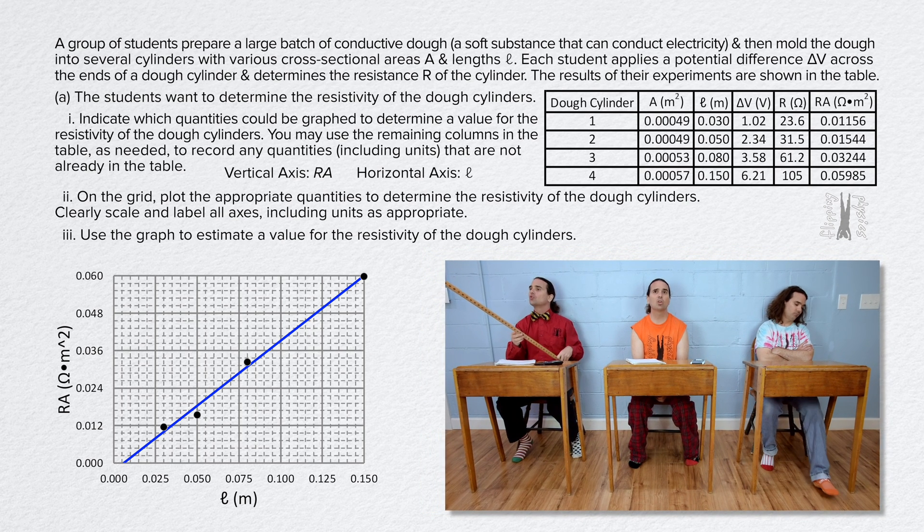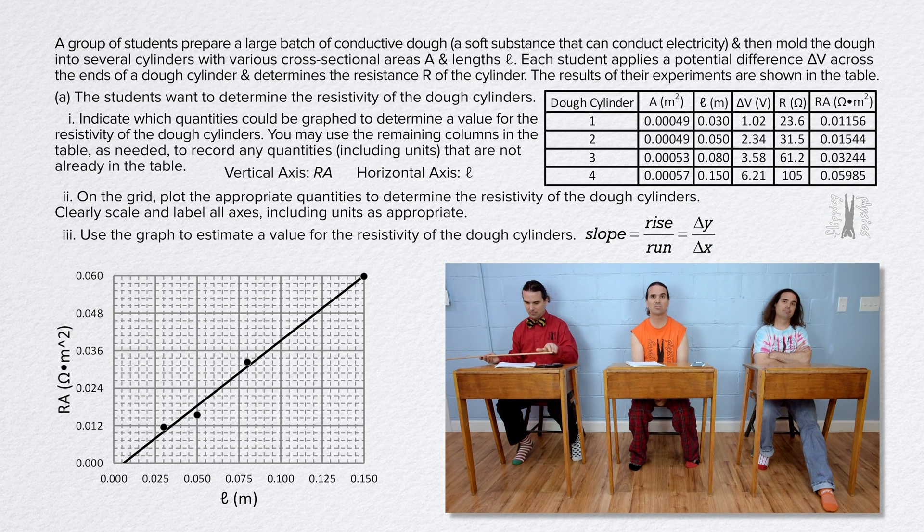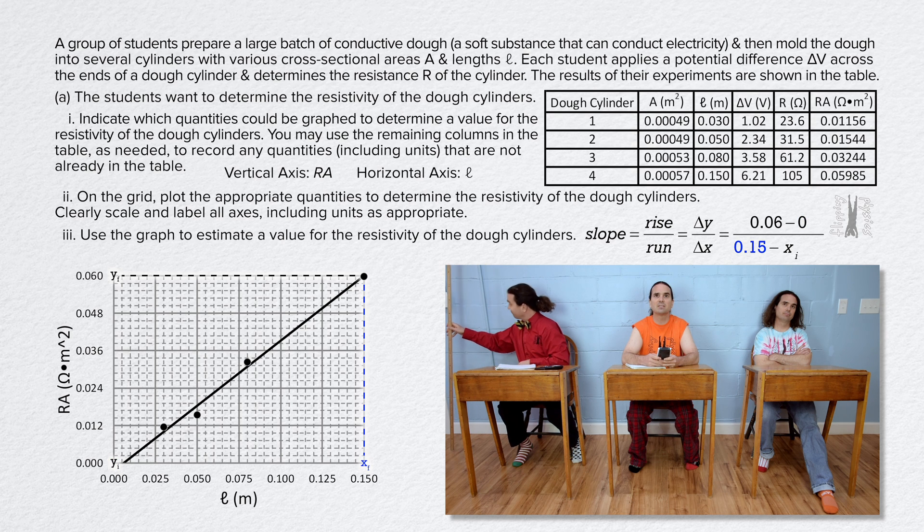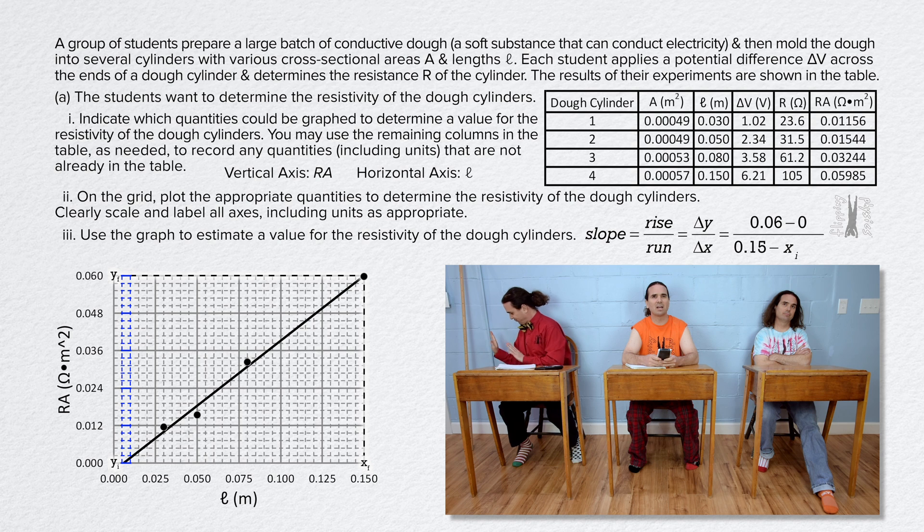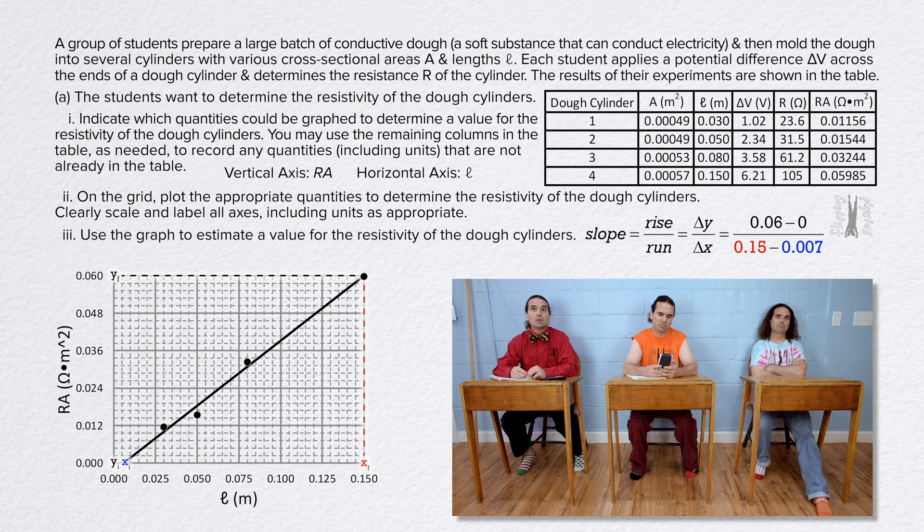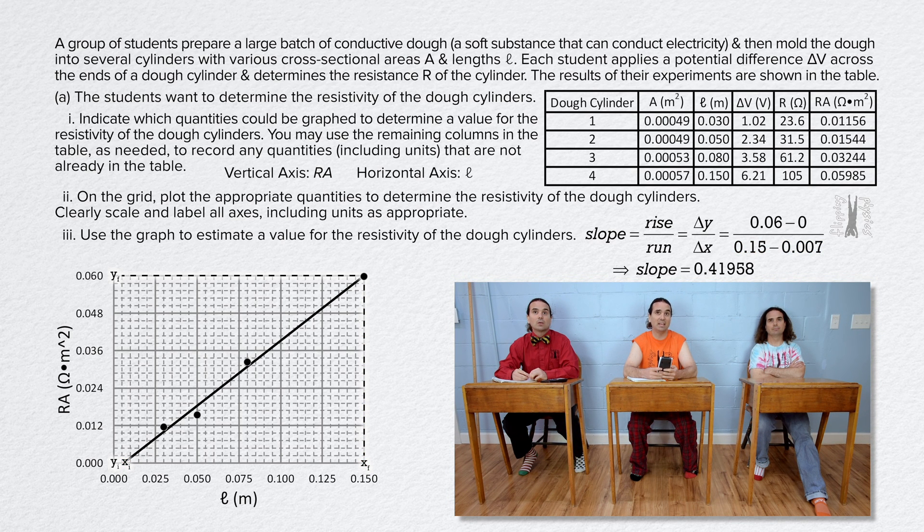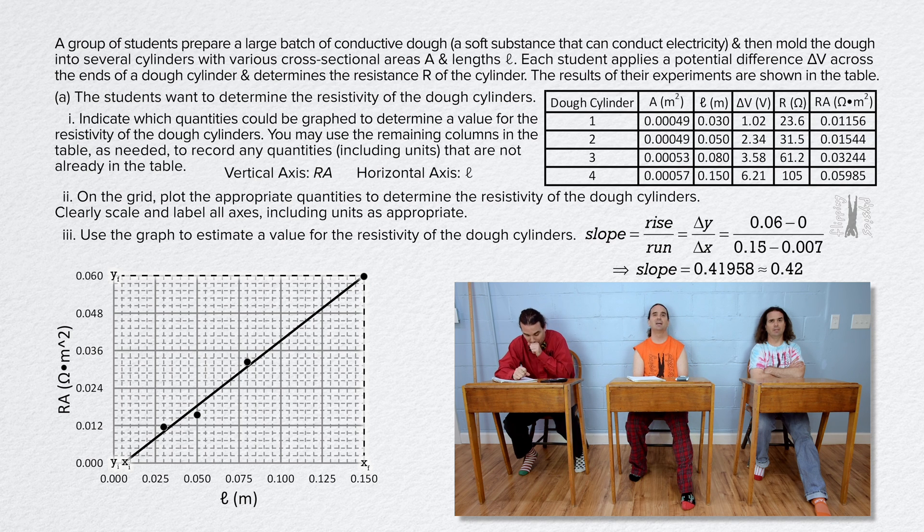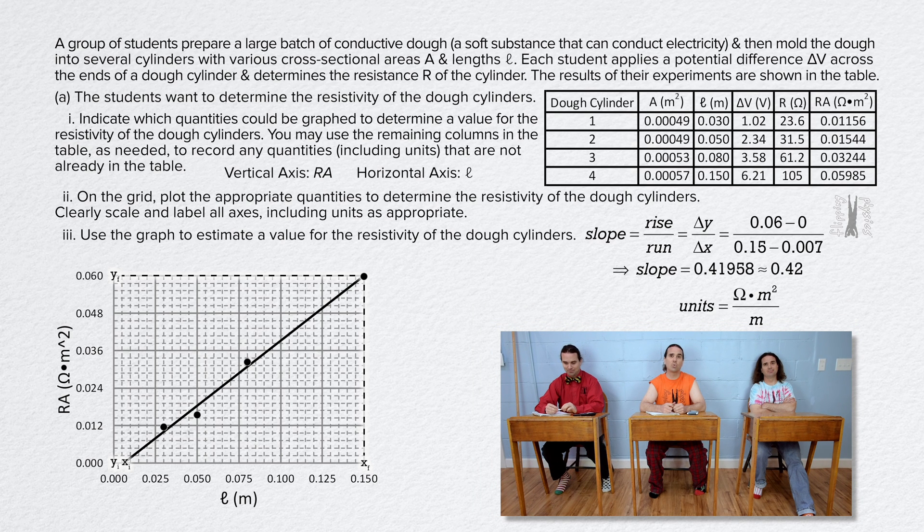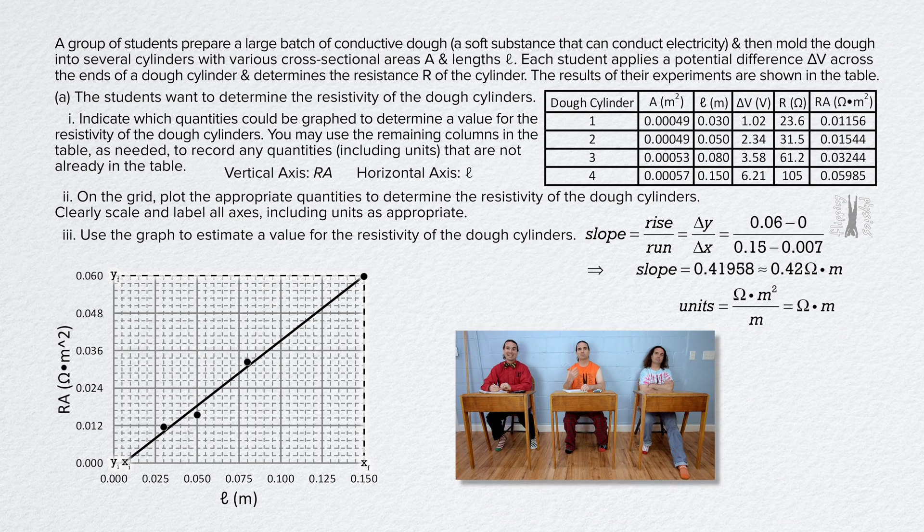Yeah. We need the slope of that line. Slope equals rise over run or delta y over delta x or 0.06 minus 0 over 0.15 minus...well, it looks like each of those minor grid lines is 0.005 meters apart and the best fit line hits the x axis a little bit after the 0.005 meter grid line. That's probably about 0.007. So, in the denominator, let's put 0.15 minus 0.007. That equals 0.41958 or 0.42 with two significant digits. Units. Yeah. Again. Right? Units. They work out to be, well, ohmmeters squared over meters or just ohmmeters. Yeah. It's resistivity. Very nice Bobby.